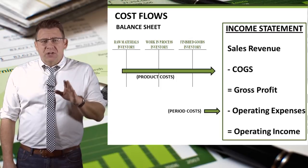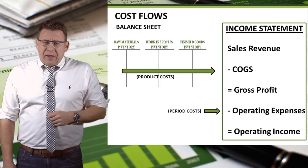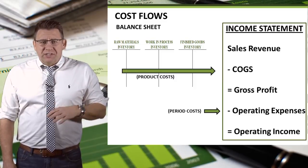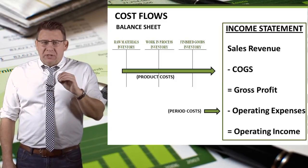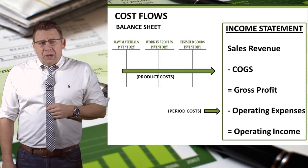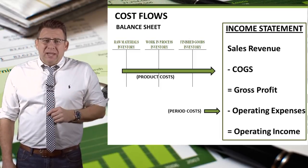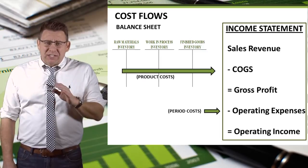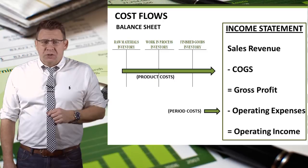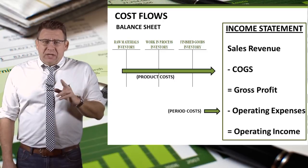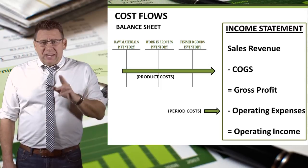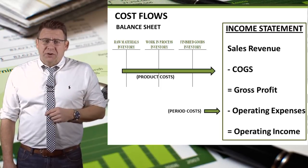Once the products have been sold, the cost moves from the balance sheet to the income statement as cost of goods sold. You can see why it's important to properly track product costs versus period costs. Product costs only end up on the income statement as cost of goods sold, and only in the period in which the products were sold. Period costs end up on the income statement primarily as operating expenses, and in the period in which they were incurred.